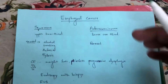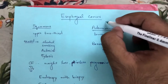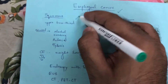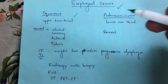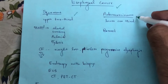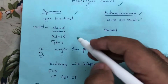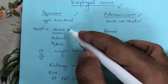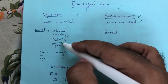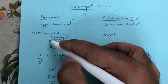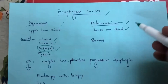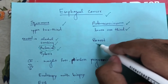The next topic is esophageal cancer. There are two types: squamous cell carcinoma, which occurs in the upper esophagus, and adenocarcinoma, which occurs in the lower third. The main cause of squamous cell carcinoma is alcohol and smoking; importantly, achalasia is also associated with squamous cell carcinoma. Barrett's esophagus is associated with adenocarcinoma.